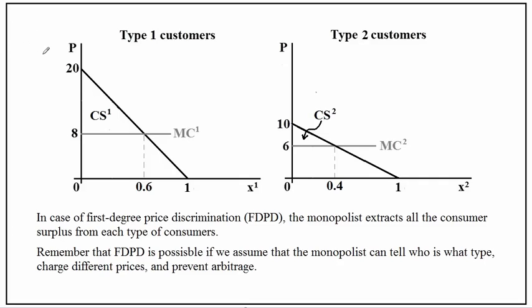Let's look at type 1 customers here — this is their normalized demand — and this is type 2 customers' normalized demand. Notice that in the case of first-degree price discrimination, I don't have the marginal revenue, because if I can perfectly price discriminate, my marginal revenue is going to be equal to the price.